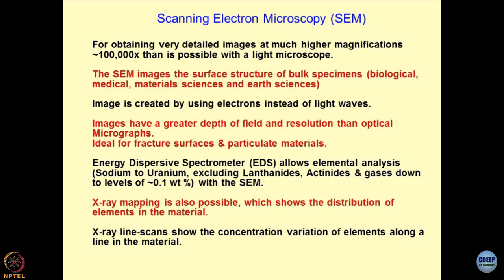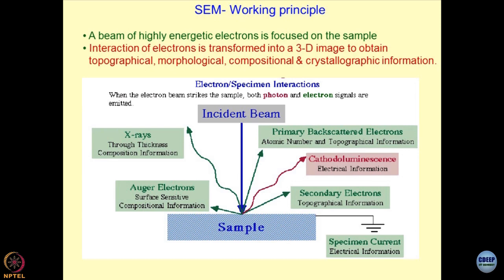Using the methodologies they developed, we have done x-ray mapping of elements present in the material, showing the alteration of minerals over a period of time when minerals come in contact with contaminants — acidic, basic, or biological. Biological features have been studied by Dr. Shashank. The working principle of SEM involves a beam of high-energy electrons focused on the sample, and the interaction of electrons is transformed into a three-dimensional image to obtain topography, morphology, composition, and crystallography of the grains.